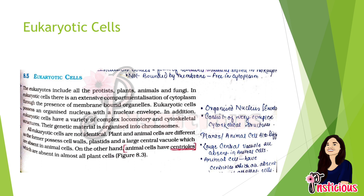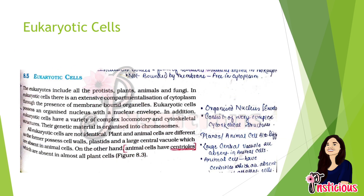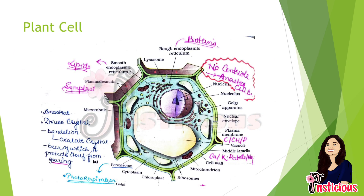In animal cells, the large central vacuole is absent, whereas animal cells have centrioles which are absent in almost all plant cells. On page 130 of your book, a diagram of the plant and animal cell is shown. Most structures are the same in both, but in the plant cell we can see that a cell wall is present and centrioles are absent.